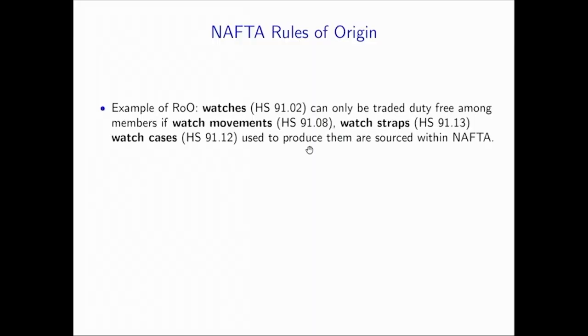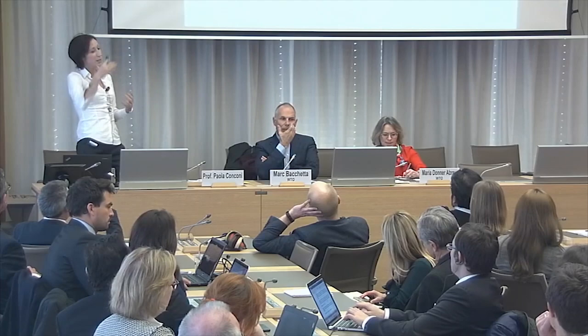In the case of watches — if you look at Annex 401, there's a certain HS6 code 9102 — the rules of origin on watches basically imply that in order for the watch to be considered as originating from NAFTA, these inputs — watch movements, watch straps and watch cases — need to be sourced within NAFTA. If a producer within NAFTA sources the watch movement from Switzerland, then you wouldn't get origin, and when exporting the watch to the other FTA partners you will not have preferential tariffs but will face MFN. This is very detailed at the product level, and this allows us to construct a new dataset that traces for every final good what are the restricted intermediate goods, and for every intermediate good we can look at what are the final goods that impose sourcing restrictions on it.